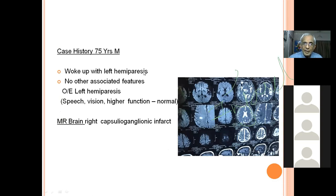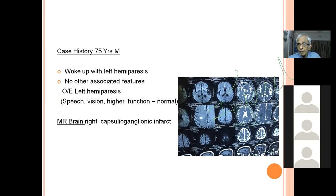When a patient has left hemiparesis with no associated features — normal speech, normal vision, normal higher functions — this indicates subcortical white matter involvement, most often the internal capsule. On imaging such patients show a capsuloganglionic infarct — an acute infarct visible on diffusion-weighted imaging and ADC map as a hypodense area in the capsular region.